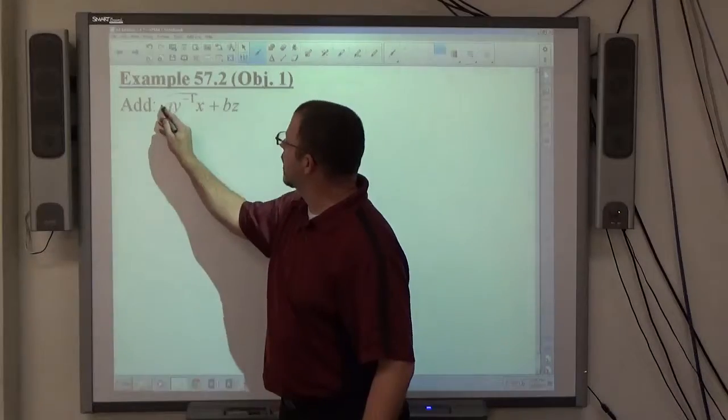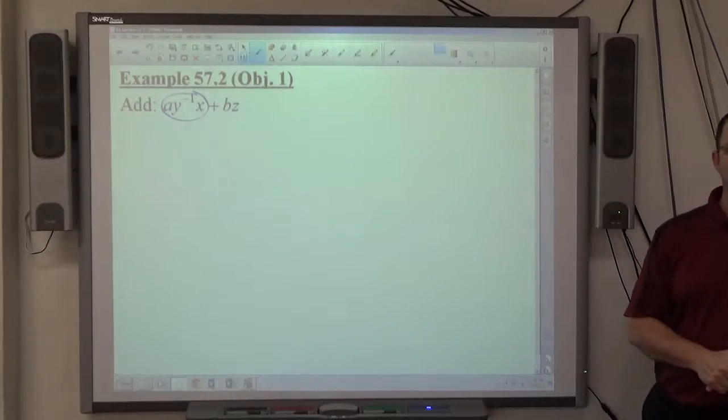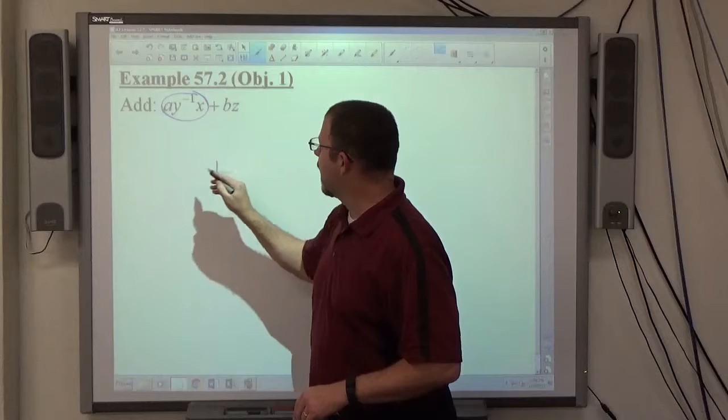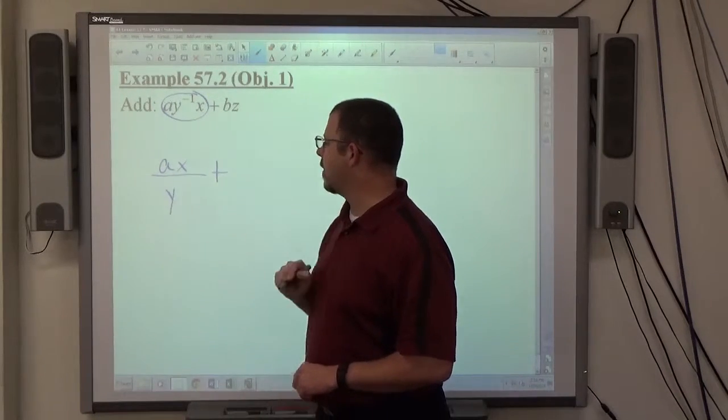Now, take a look at this. This has a negative power in it. This one doesn't. But again, step one in the process is any negative powers have to be fixed. So to the left of the plus sign, I need to create a fraction. A and X are behaving themselves. They stay on top. Y belongs to the bottom.